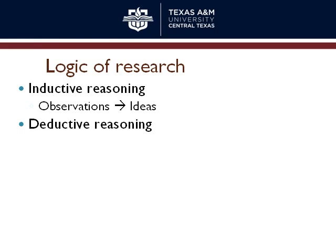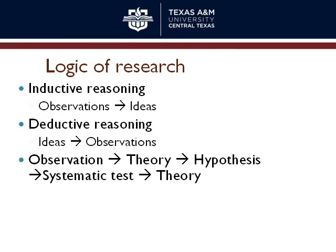Deductive reasoning works in the opposite direction, and that's why the two are often partners in science. You start with ideas and go toward observations. If positive feedback in social interactions makes one more outgoing, then in an experimental setting, if we give some people positive feedback and others negative feedback, the first group should be more outgoing. There's a cyclical nature of science where observations lead to ideas, ideas lead to predictions, and you see it or you don't.